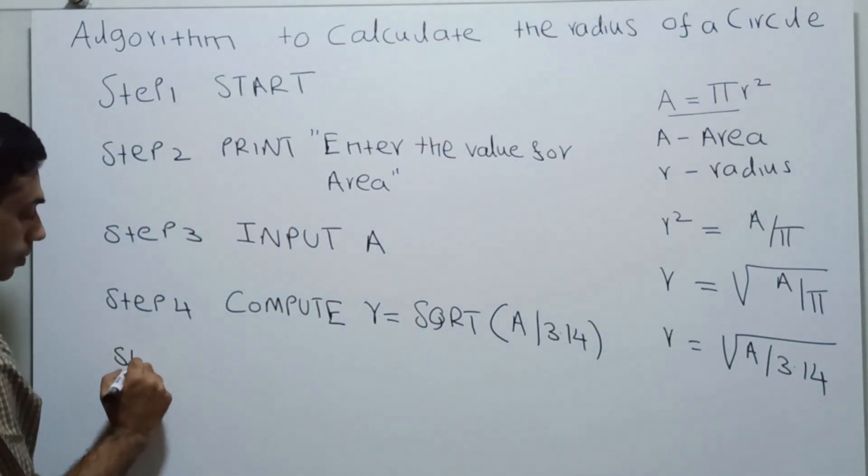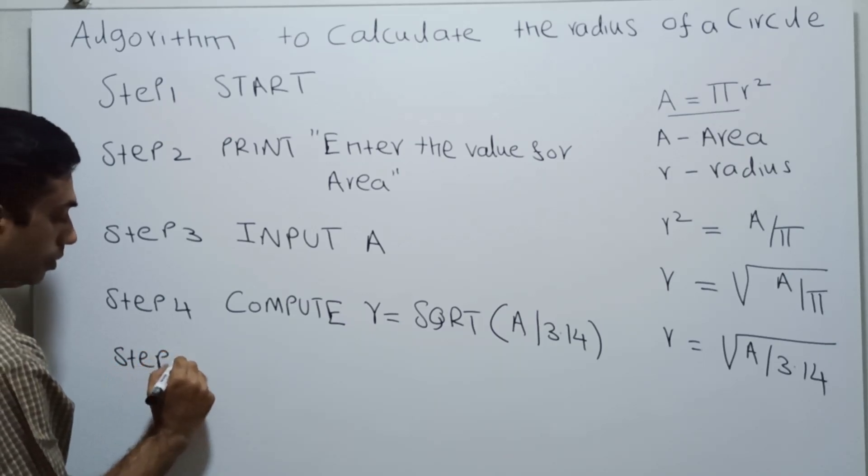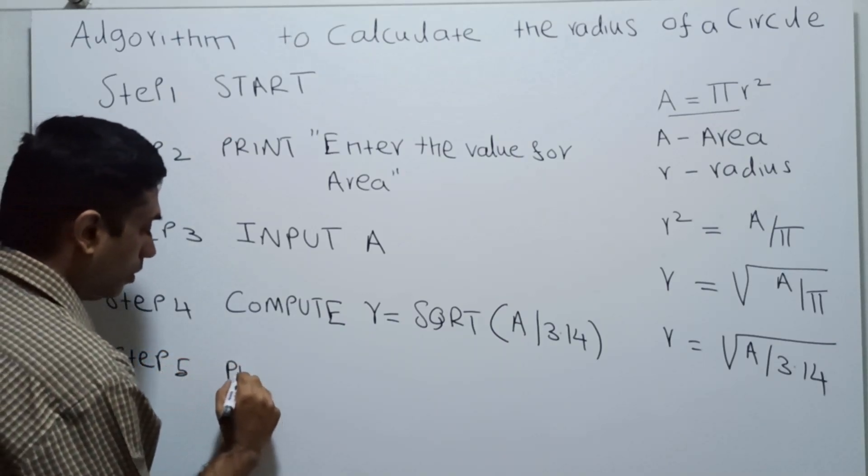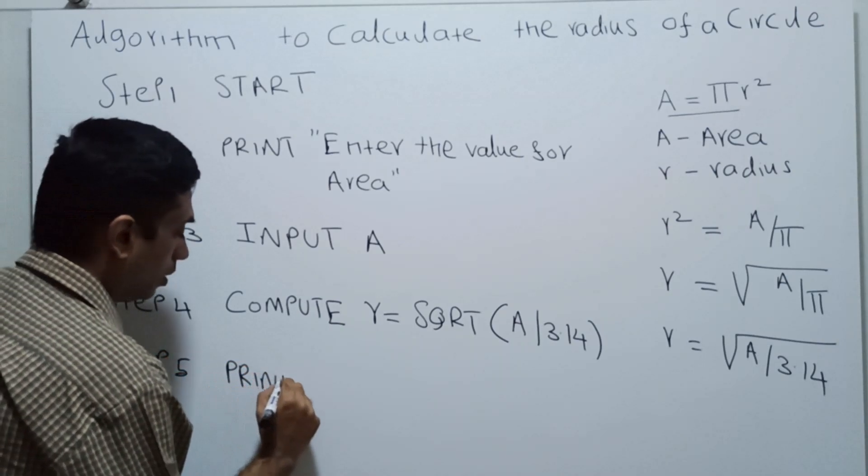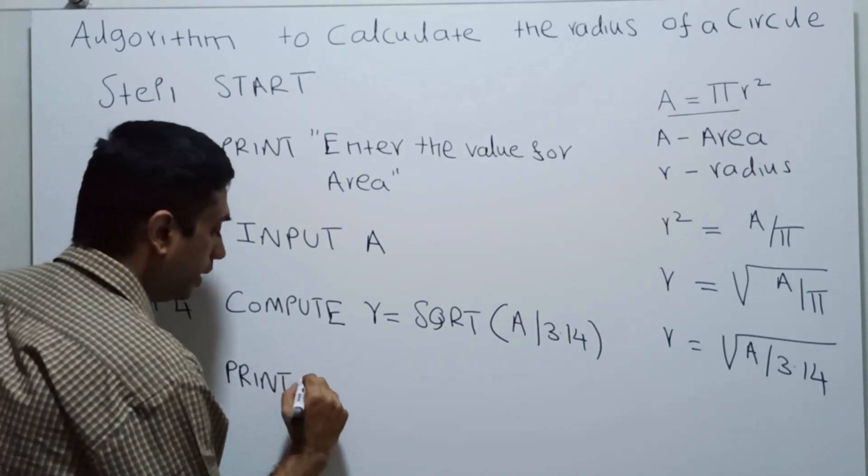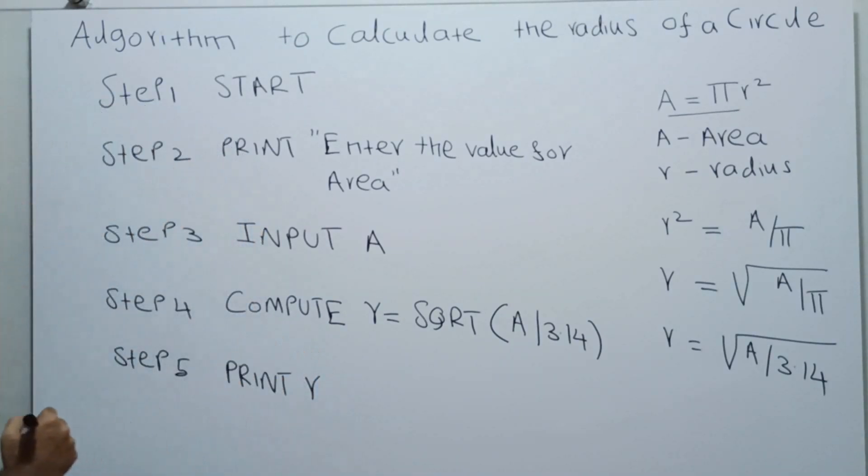Next I have to print the result. Step 5: Print the radius value r.